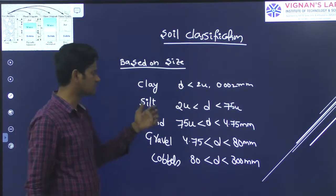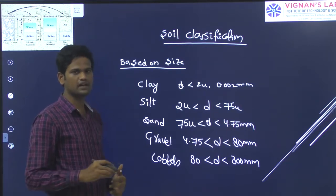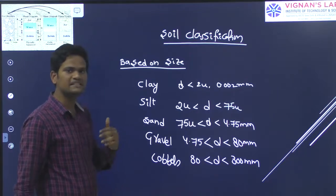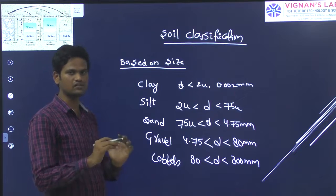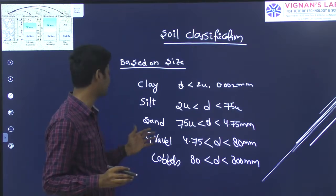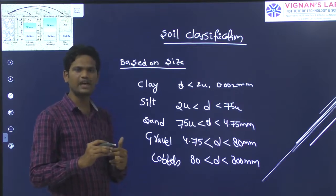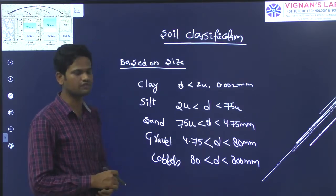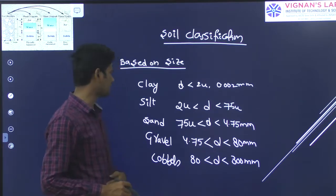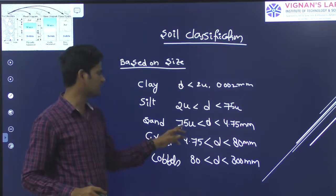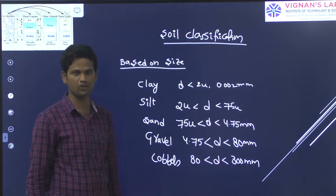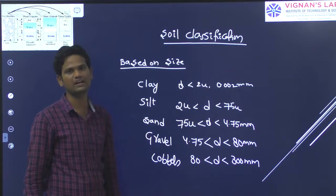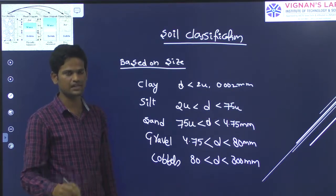Based on the size of the soil particles, if you consider any mountains, valleys and rocks — these get weathered by physical or chemical weathering. Based on physical weathering, large boulders or cobbles get converted by mechanical action into gravel, sand, silt and clay. The size of particles in the range between 75 microns to 80 mm is called the coarser fraction or coarser material.